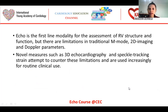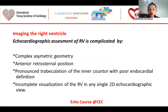Echo is the first-line modality for the assessment of right ventricular structure and function, but there are some limitations in traditional M-mode imaging and Doppler parameters. Novel measures such as 3D echocardiography and speckle tracking strain attempt to counter these limitations and are used increasingly for routine clinical use. Echocardiographic assessment of RV is complicated by its complex asymmetric geometry, anterior retrosternal position, pronounced trabeculation with poor endocardial delineation, and incomplete visualization of the RV in any single 2D echocardiographic view.